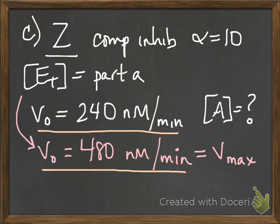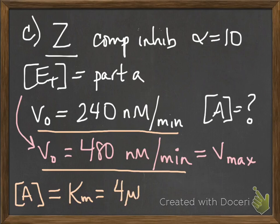So again, you can see there's this conceptual check you can have where you notice that this velocity value is exactly half of this velocity value. So that lets you know that your substrate concentration is going to be equal to KM which you were given in the problem as 4 micromolar.